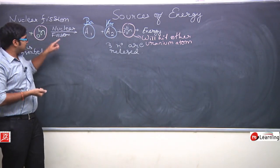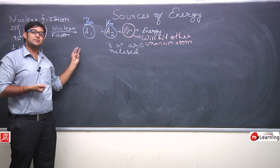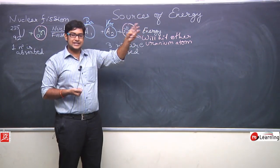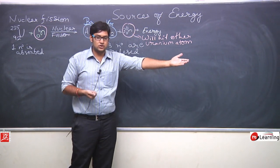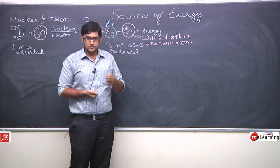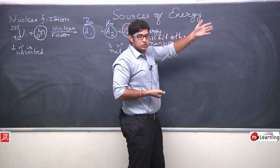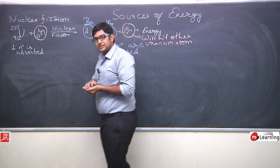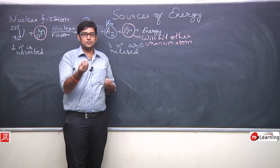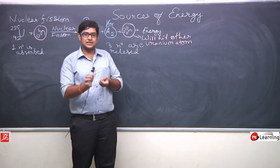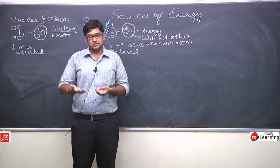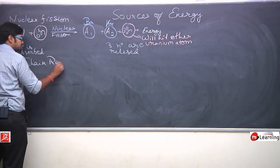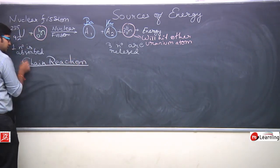These 3 neutrons will each hit 3 new uranium atoms, causing the reaction to happen 3 more times. First reaction produces 3 neutrons, second reaction produces 3 more, third produces 3 more. So from 3 neutron hits, 9 new neutrons are produced. Then 9 become 27, and this reaction continues. This is called a chain reaction - like firecrackers, where you give one spark and they continue bursting automatically.